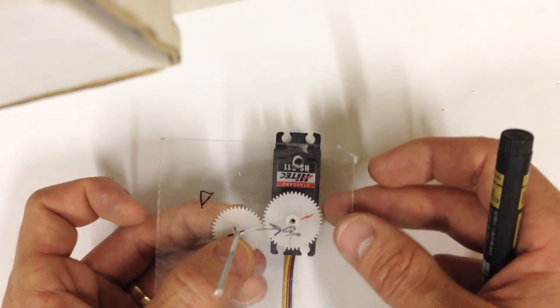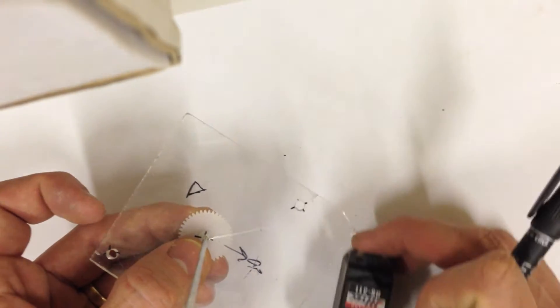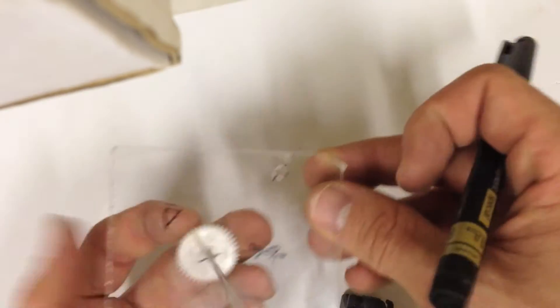So the problem is that these teeth are very small. So when you install the servo, you need to be very precise that these connect. Otherwise the gauge won't work.